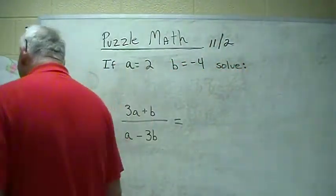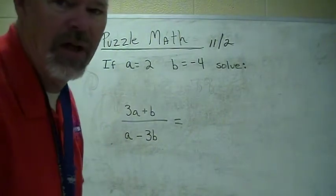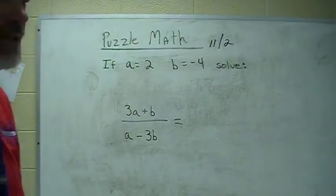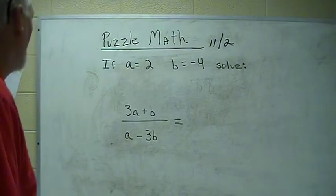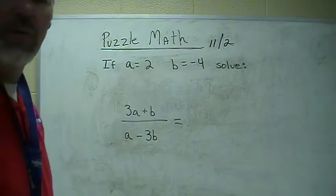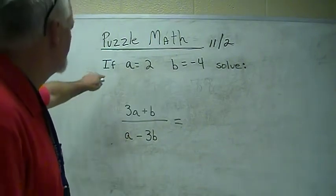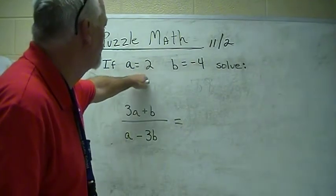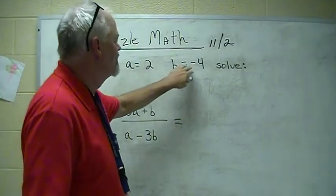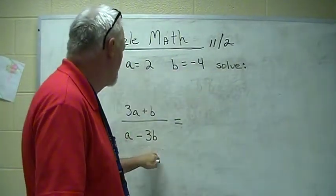Puzzle math. I've talked to a lot of you all, and yes, you agree. This is the easiest thing we've done yet. So, who doesn't like to do a puzzle, right? So, get this written down. If A equals 2, B equals negative 4, they want us to solve this problem.